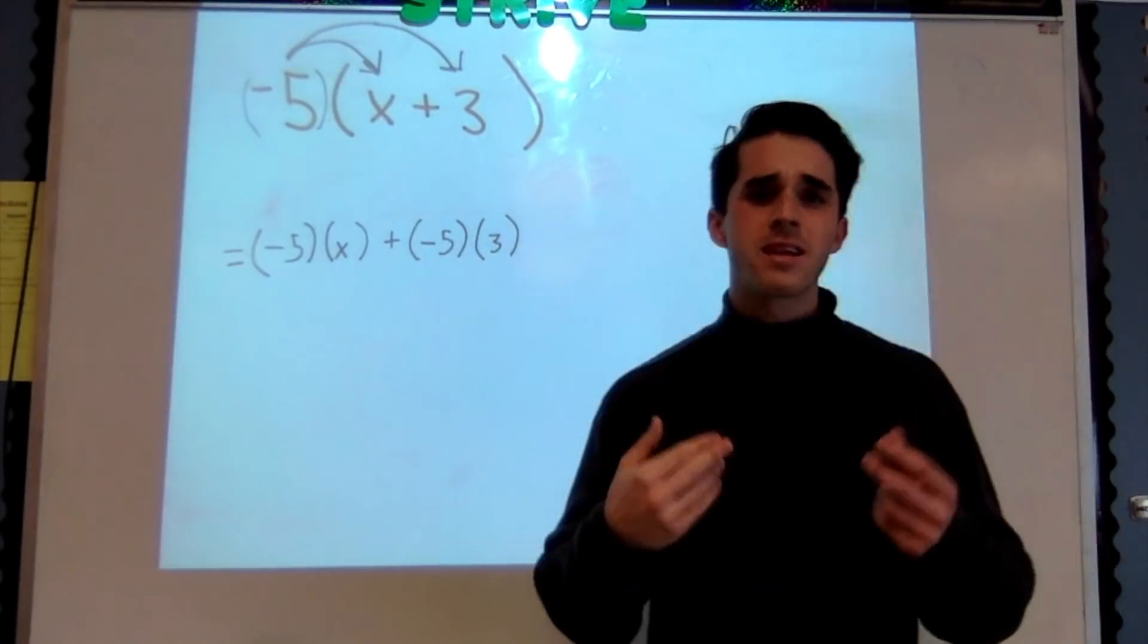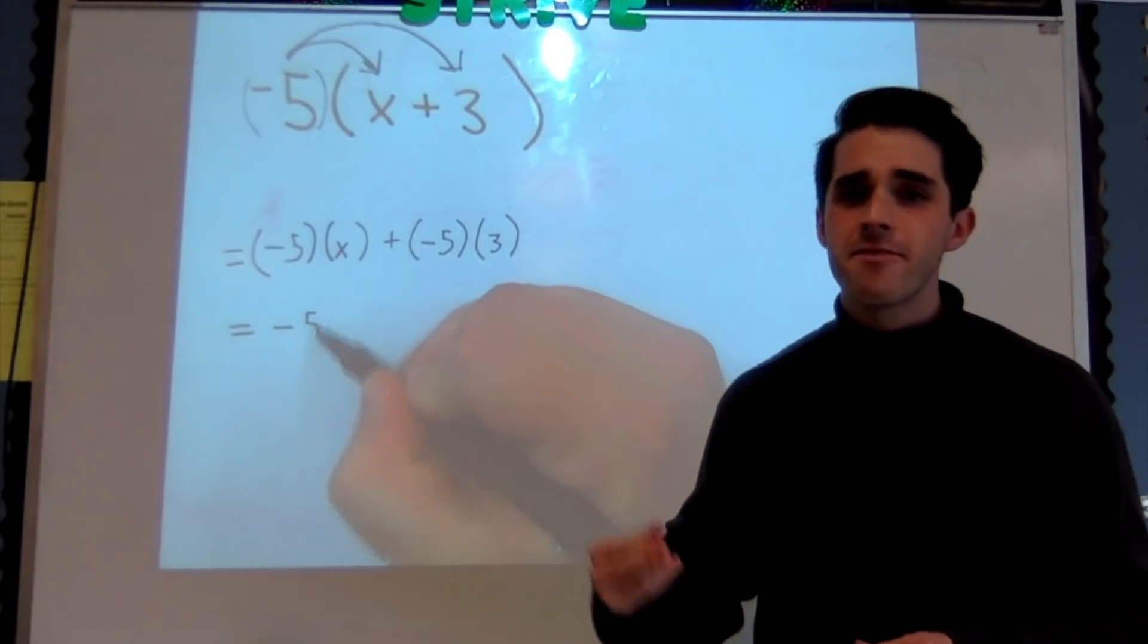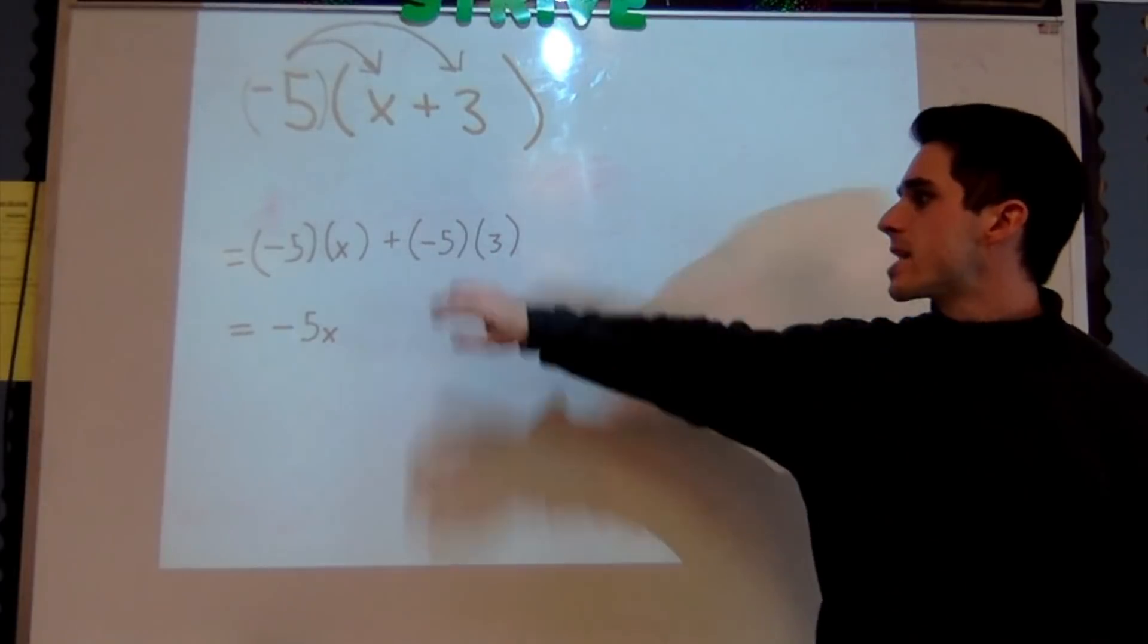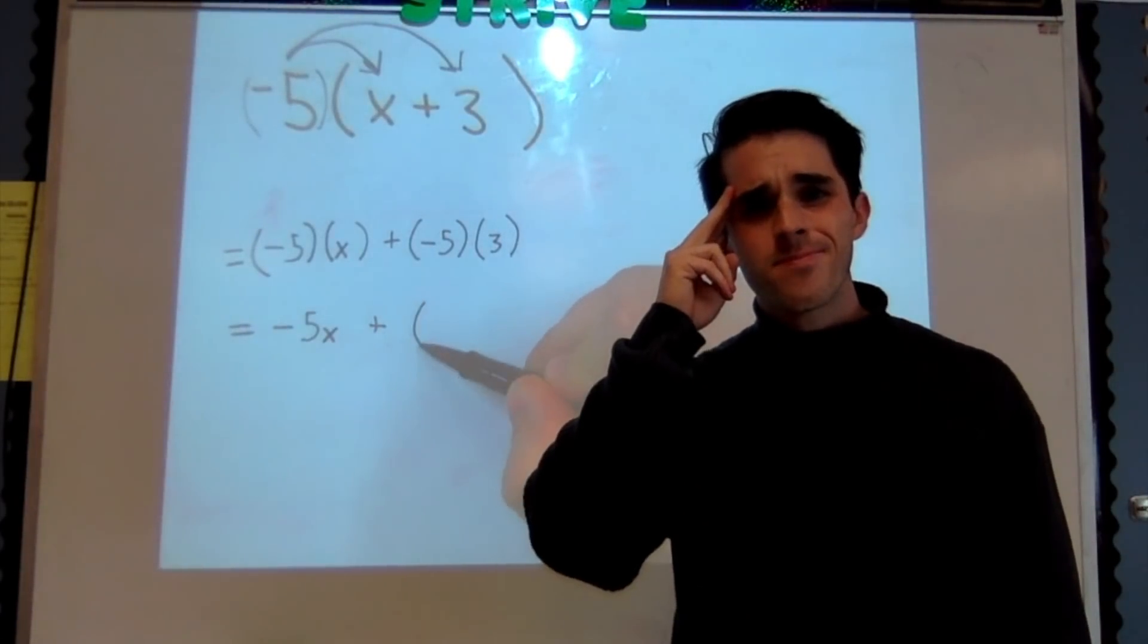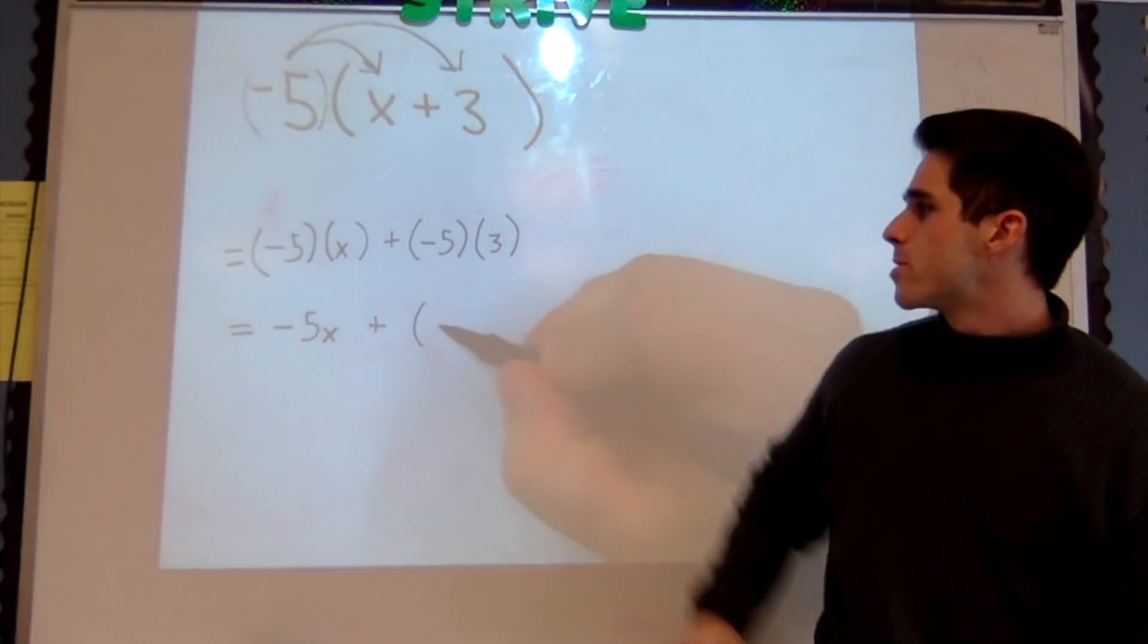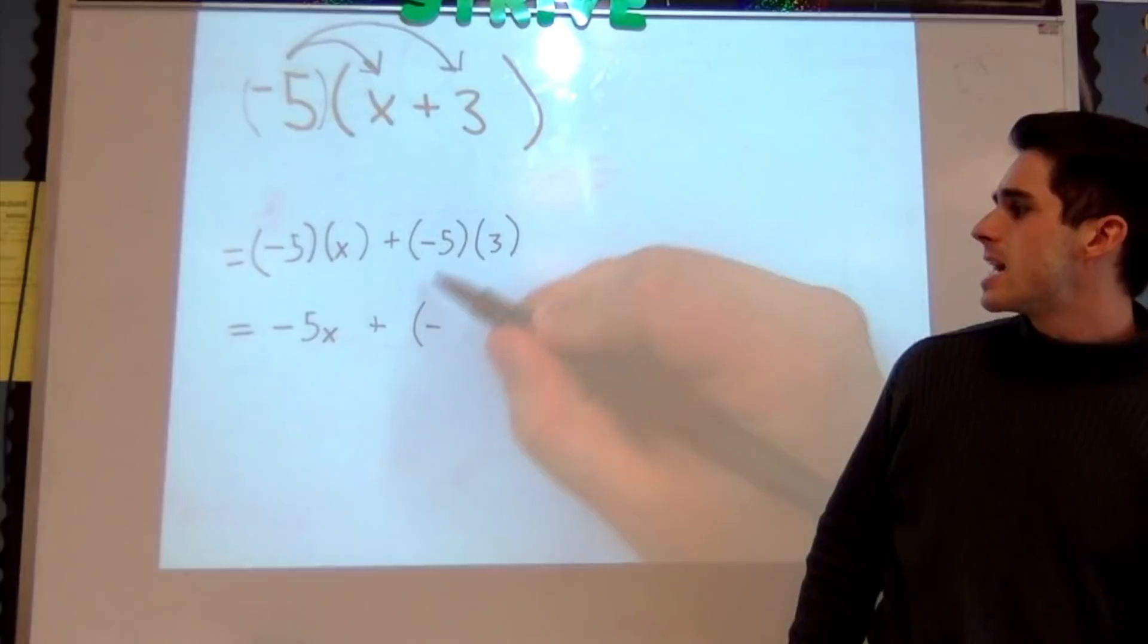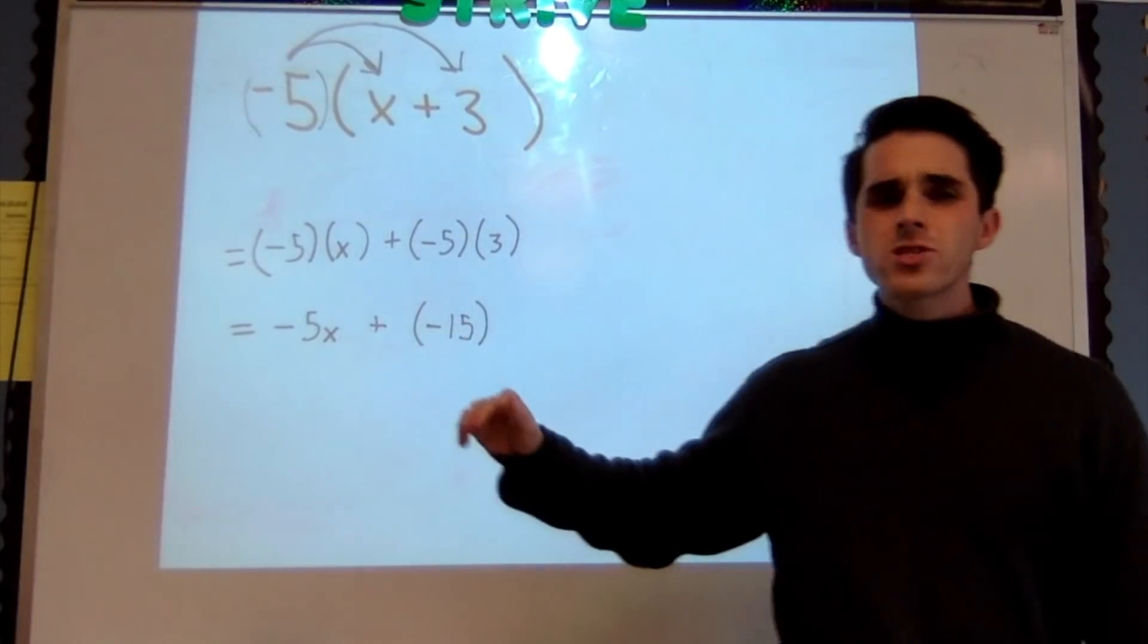Well just like in the last example, -5 times x, that's an easy one. We're gonna rewrite that as -5x plus. I'm thinking right here I got a negative times a positive. I know in my brain, product of a negative and a positive, that's gonna be negative. So rewrite this as + (-15).